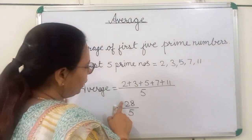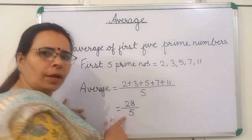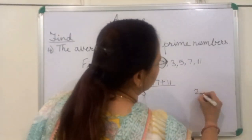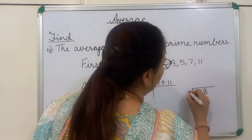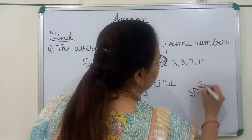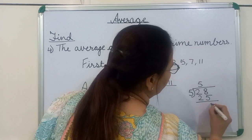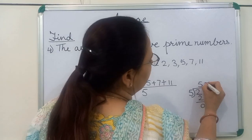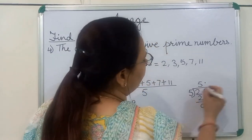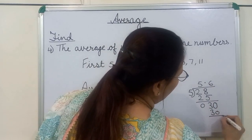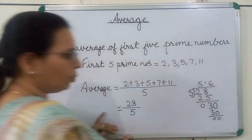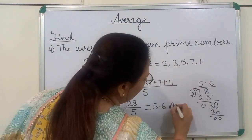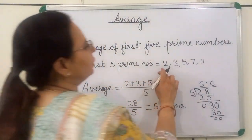Here, you can see 28 is not exactly divisible by 5. So, we will give the answer in decimal. We divide 28 by 5: 5 fives are 25, remainder 3, then bring down a zero to get 30, and 5 sixes are 30. We get 5.6. So, 5.6 is the average of these numbers.